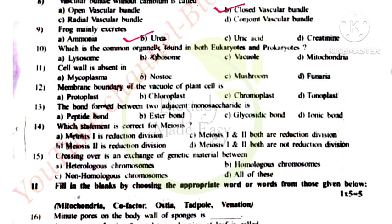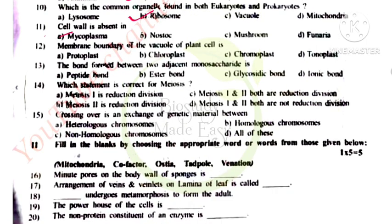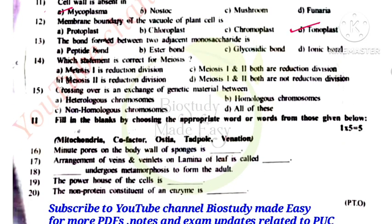The organelle common to both eukaryotes and prokaryotes is the ribosome. Cell wall is absent in mycoplasma. The membrane boundary of the vacuole in a plant cell is called the tonoplast. The bond formed between adjacent monosaccharides is called a glycosidic bond.